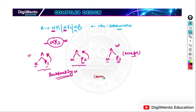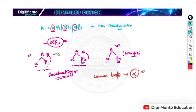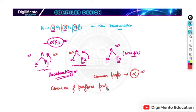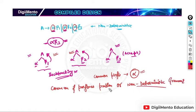This backtracking is happening because of the common prefix alpha. We have common prefix alpha in all three productions. Due to this common prefix, in the first two cases there is backtracking. This is also called the common prefixes problem, and it results in non-deterministic grammar.